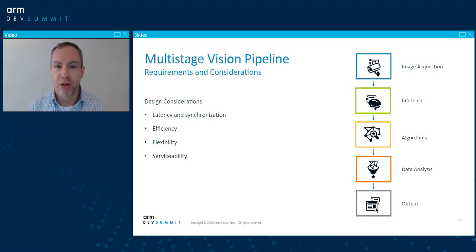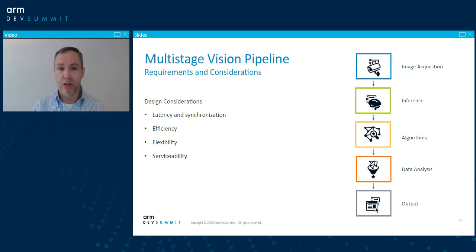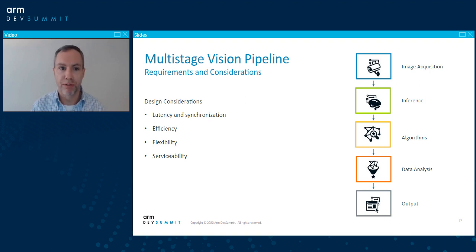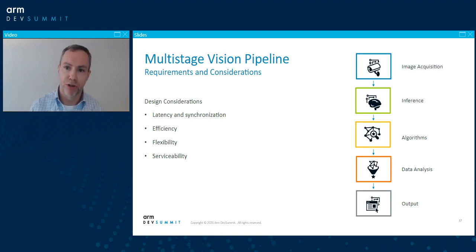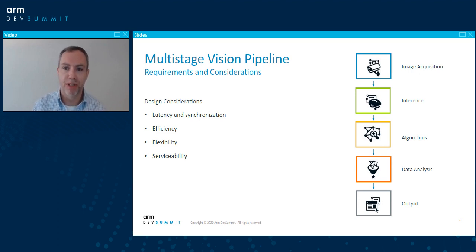The first step is to really think about our vision pipeline as a whole, and remember that inference is only one aspect of it. In addition to inference, we're going to need algorithms for tasks such as motion tracking. We need to apply heuristics to create logical rules such as actions based on time of day. We also need to gather data from our scene over time to look for patterns, anomalies, or strange behavior, and output our results and event notifications. We also need to consider carefully the overall architecture — our application is real-time and uses time-sensitive video frame data.